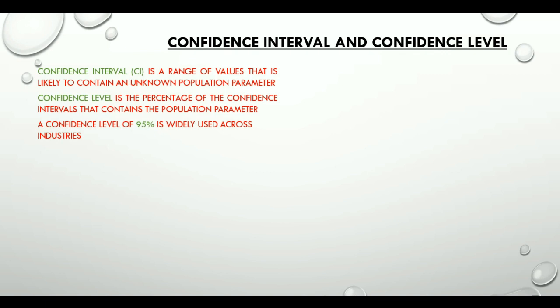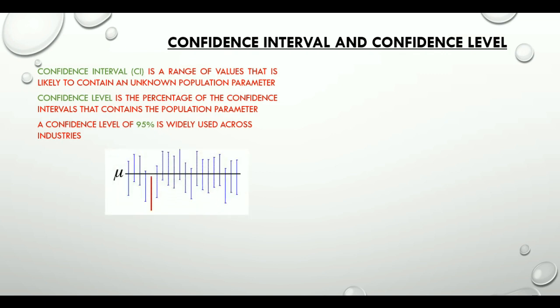Let's delve a little more into it. Have a look at this picture. Here, the horizontal black line represents the unknown population mean mu.